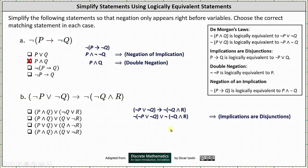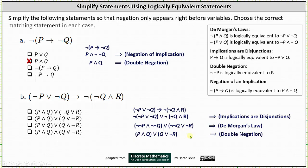Now we'll apply De Morgan's Law. On the left, the negation passes through the parentheses and applies to the negation of p, which gives us a double negation of p. The or changes to and, and we negate the negation of q, which gives us the double negation of q. Applying De Morgan's Law on the right, again the negation passes through the parentheses, giving us the double negation of q; the and changes to or and we negate r. Now we simplify the double negations, which gives us p and q or q or not r.